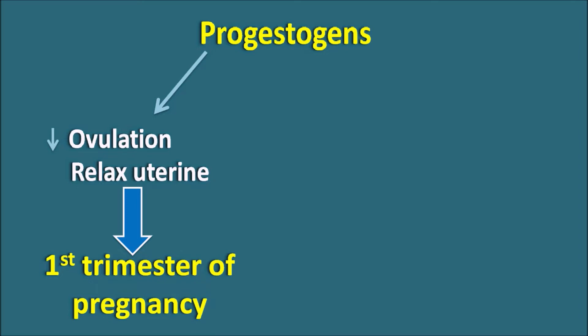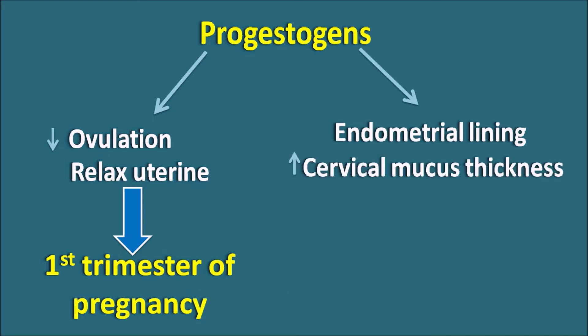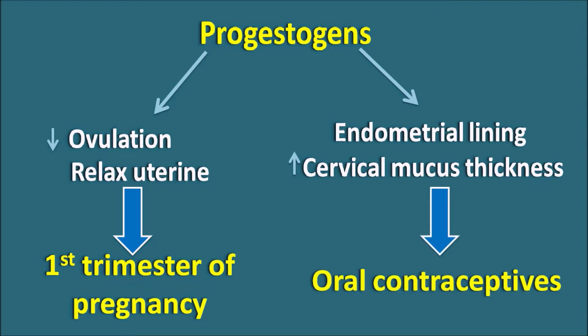On the other hand, these hormones can also be given to prevent pregnancy. When progestogens are given before fertilization, they can alter the endometrial lining as well as increase the cervical mucus thickness, which prevents the interaction of sperm with the egg, thereby preventing fertilization. So progestogens can also be given as oral contraceptives, either alone or combined with oestrogens. In this way, progestogens play a quite opposite role before and after fertilization.